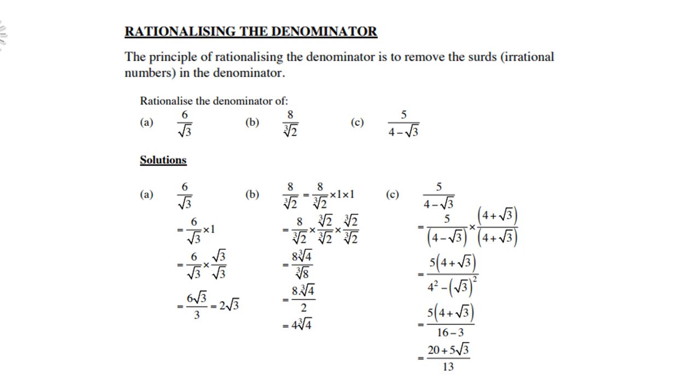Cube root 2 times cube root 2 gives you cube root of 4 in the numerator. At the bottom, cube root 3 times cube root 3 times cube root 3 is the cube root of 8. The cube root of 8, of course, is 2, and 2 into 8 is 4. Therefore, the answer is 4 times the cube root of 4.